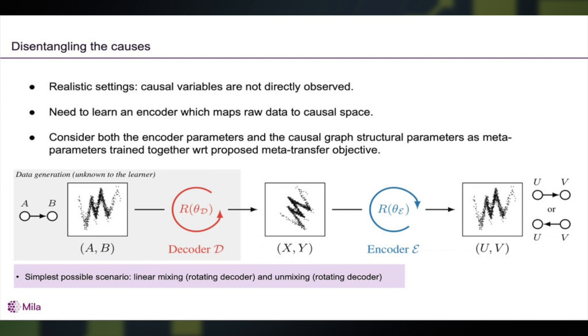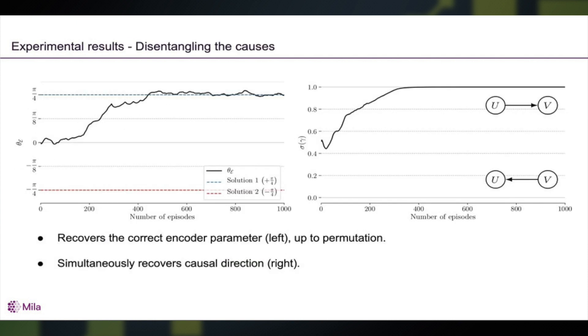So we do just that in a very simple scenario where there's only one parameter for the encoder, which controls the angle of the rotation between the two input variables and one parameter, one meta-parameter, which controls our belief into is it U or V, which is the cause or the effect. And indeed, as you can see, we can fairly quickly recover these two things.